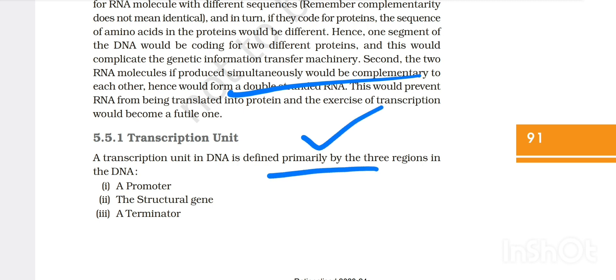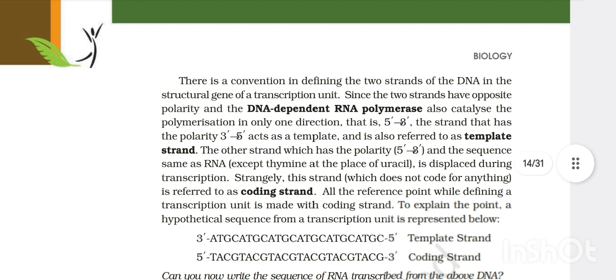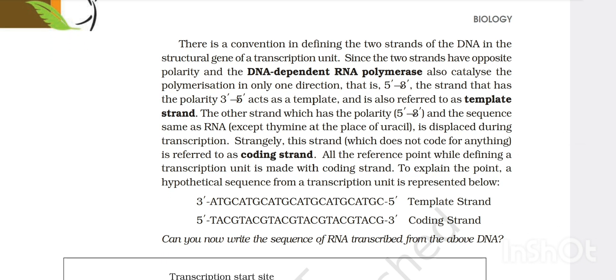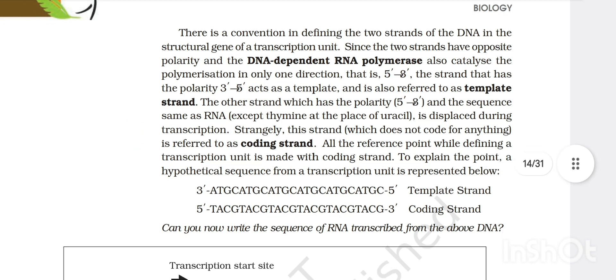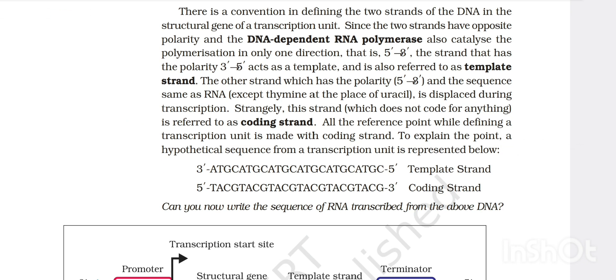Then transcription unit. The transcription unit in DNA is defined by three regions: a promoter, a structural gene, and a terminator. There is a convention in defining two strands of DNA in a structural gene of transcription unit. Since two strands have opposite polarity and the DNA dependent RNA polymerase also catalyzes the polymerization in one direction, that is 5' to 3' direction, the strand that has the polarity 3' to 5' acts as a template and is also referred to as template strand.